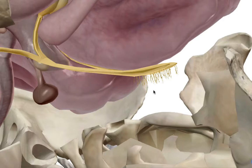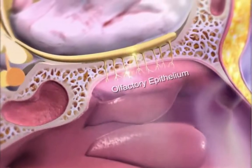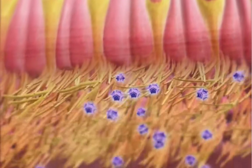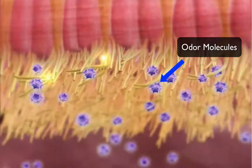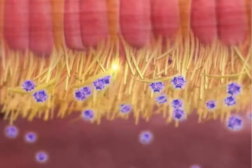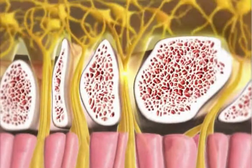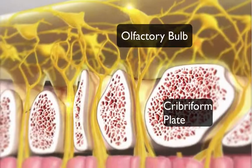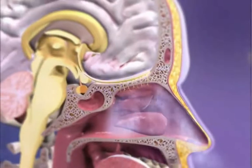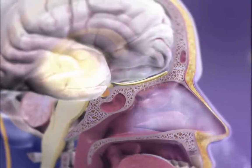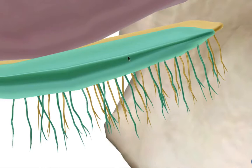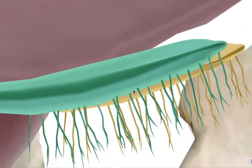I've removed the ethmoid bone for a closer look. There are about 20 million olfactory fibers passing through the ethmoid bone, and at the end of each fiber there are about 10 to 20 cilia — tiny receptor binding sites for odor molecules in the air. For comparison, a bear has about 2,100 times the olfactory capacity of a human, with an olfactory bulb about five times larger.